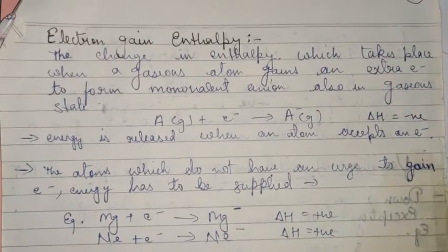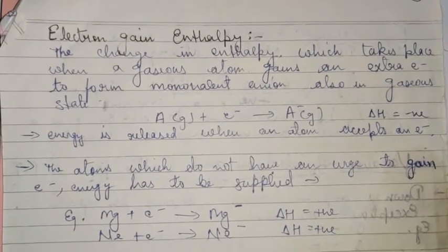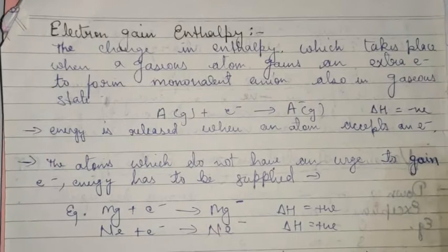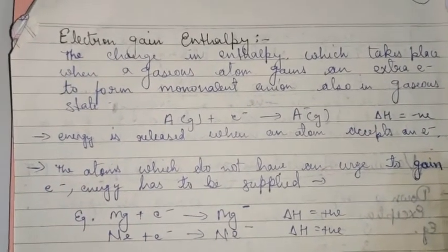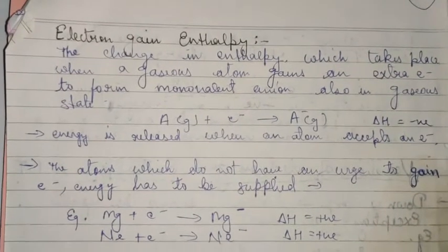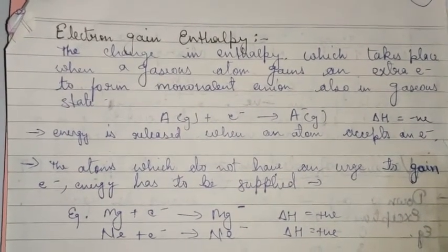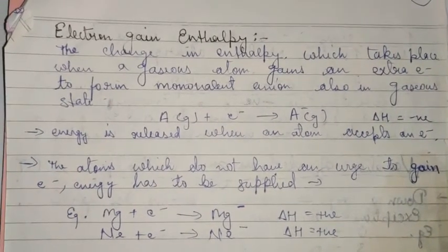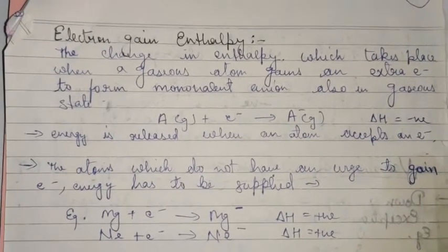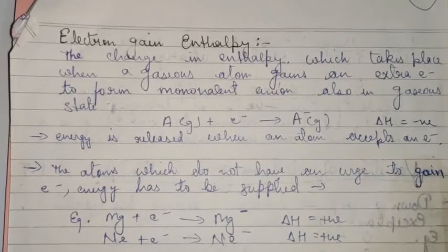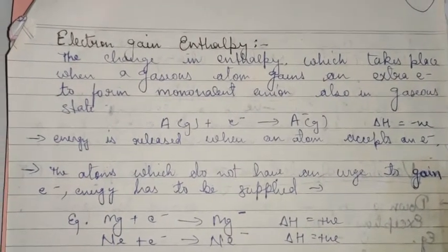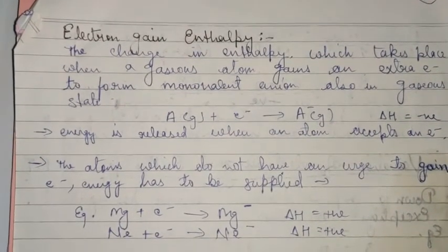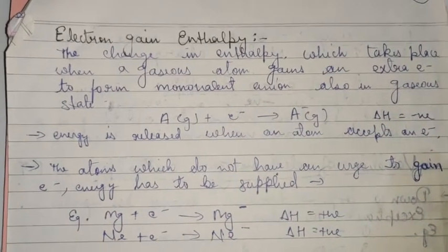Good morning students. In yesterday's session we learnt about a very important periodic property - ionization enthalpy or ionization potential. I told you about the factors on which ionization potential depends. Let's recall: ionization enthalpy is the amount of energy required to remove an electron from the outermost shell of an isolated gaseous atom. The terms 'isolated' and 'gaseous' should come in your definition.